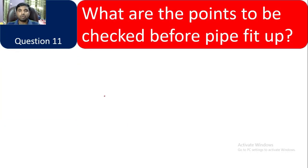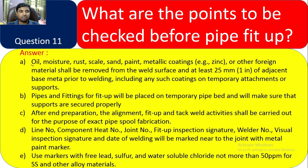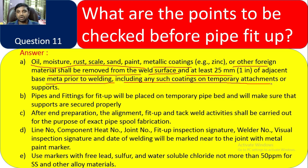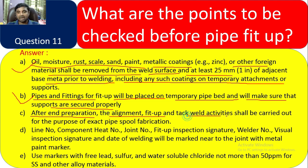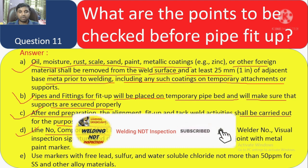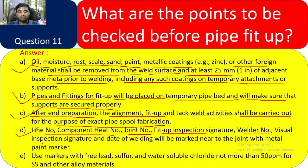Question 11: What are the points to be checked before pipe fit-up? Moisture, rust, scale, sand, paint, metallic coating, and all other foreign materials shall be removed from the weld surface at least 25 mm on the base metal prior to welding, including any coatings, temporary attachments, or supports. Pipes and fittings for fit-up will be placed on temporary pipe beds — ensure supports are secured properly. After alignment, fit-up and tack activities shall be carried out for full fabrication. Line pipe component heat number, joint number, fit-up inspection signature, welder number, and visual inspection signature shall all be completed near the joint with metal paint marker.